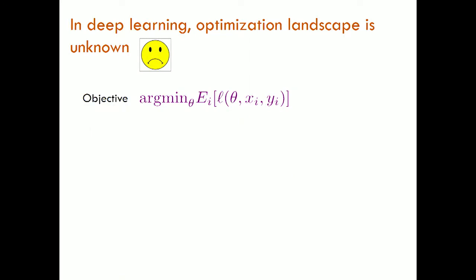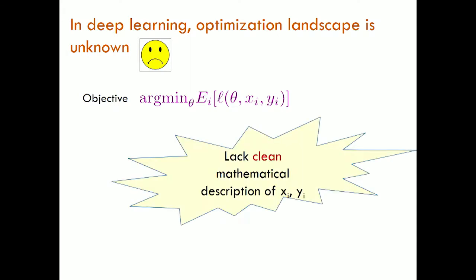The problem is that in deep learning, the optimization landscape is unknown. You might say: you just wrote the cost function for me, that's the landscape. But it's unknown because we don't have any mathematical description of what the inputs x_i are — what real images or fMRI data look like. We don't have any mathematical description of the labels. What makes an image an image of a cat or a dog? We lack that mathematical theory. It's like having a function with random or unknown coefficients — you have no idea of the landscape.